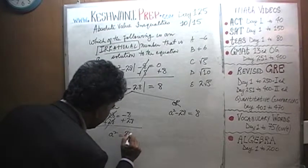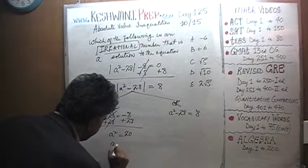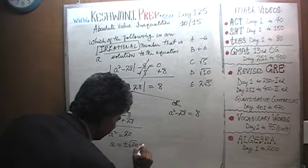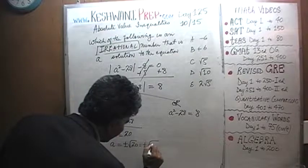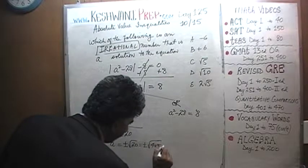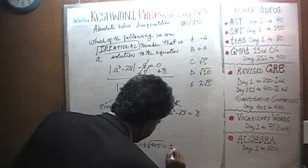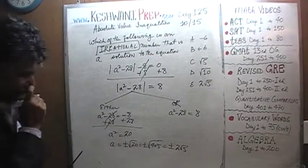It gives us positive 20, which means a is equal to positive or negative root 20. And of course, root 20 can be written as 4 times 5. And we know the square root of 4 is 2. So it's positive or negative 2 root 5.